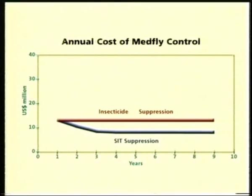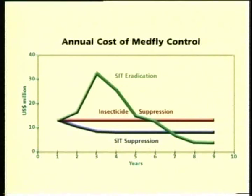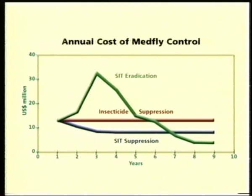SIT eradication requires an initial investment in equipment and infrastructure and has higher operating costs. However, once the area is pest-free, operating costs fall substantially, and are related only to surveillance and quarantine. In the end, the total cost of any SIT eradication program is higher than insecticide suppression in the early years, but the long-term benefits outweigh the investment.